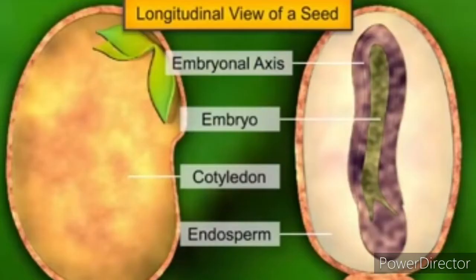A seed consists of seed coat, cotyledons and an embryo axis. The cotyledons of the embryo are simple structures, generally thick and swollen due to storage of food reserves.